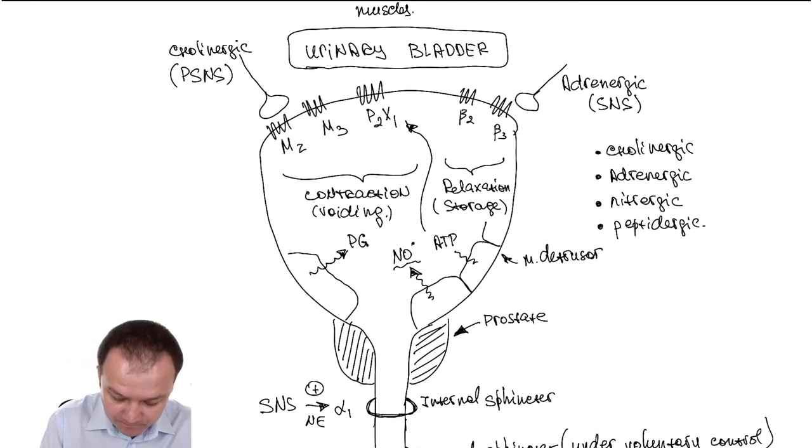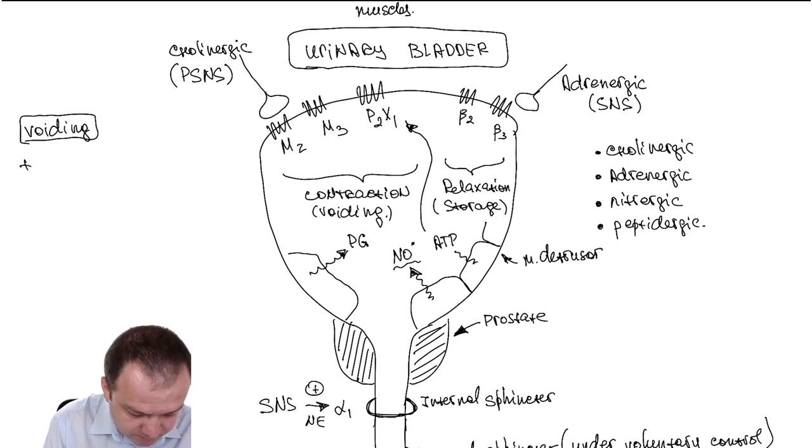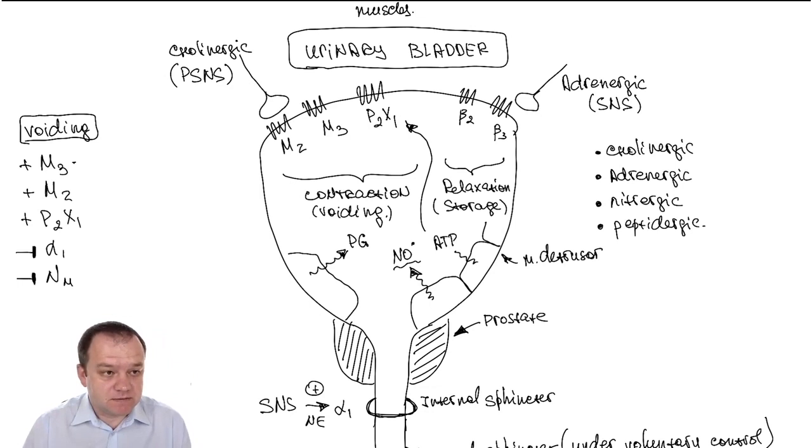So again, let's recap, voiding stimulation of M3 receptors, stimulation of M2 receptors, stimulation of P2X1 receptors, and inhibition or blockade of alpha-1 adrenergic receptors, and relaxation of skeletal muscles, blockade of NM3, decreasing impulsation, not blockade, decreasing impulsation.